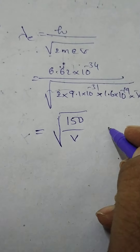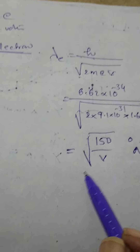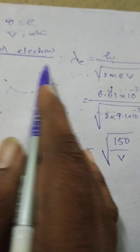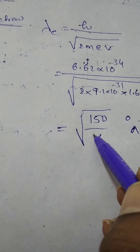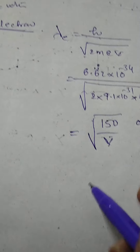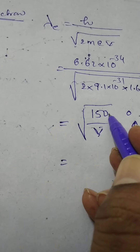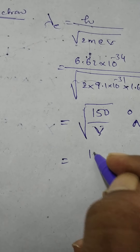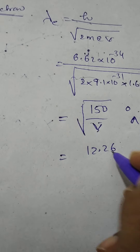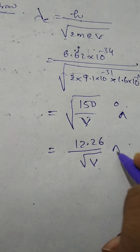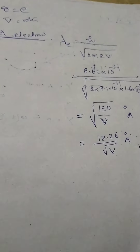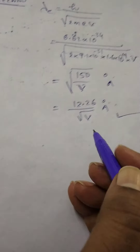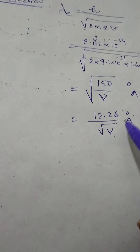On solving, it is root of 150 by V angstrom units. So the de Broglie wavelength corresponding to the electron is root of 150 by V, which is approximately 12.26 by root V angstrom units, where V is the potential difference to which the electron is accelerated.